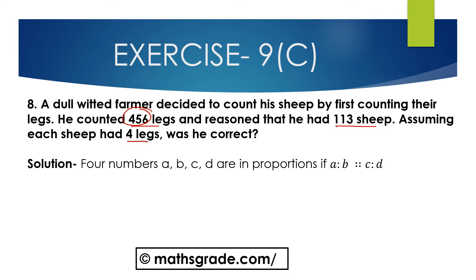He counted 456 legs. 1 sheep had 4 legs. So it is given that 4 legs equals 1 sheep.